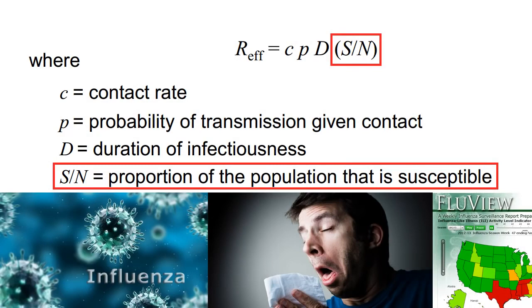There's a second number called the effective reproductive rate. It's the product of the basic reproductive rate and the proportion of the population that are susceptible to the disease, abbreviated S over N.